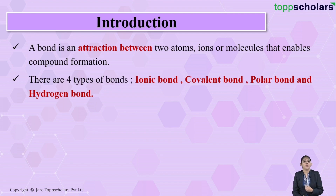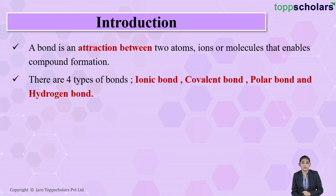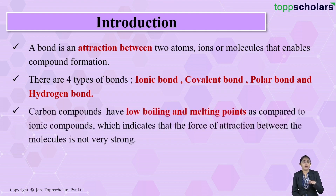There are four types of bonds, depending upon the attraction between the atoms, ions, and molecules: ionic bond, covalent bond, polar bond, and hydrogen bond. Carbon compounds show covalent bonding.